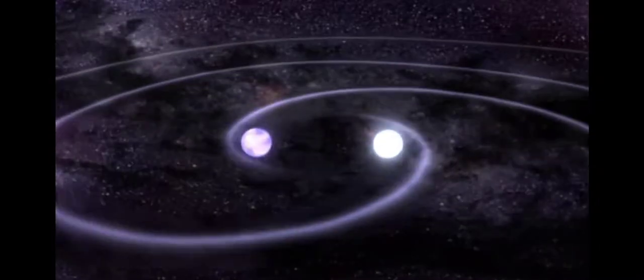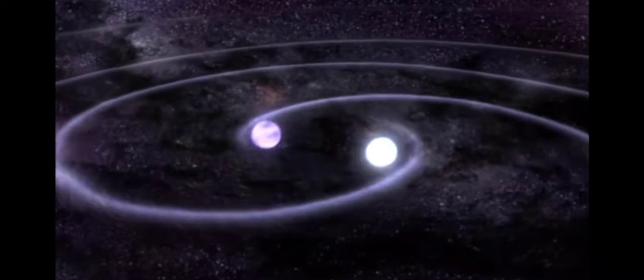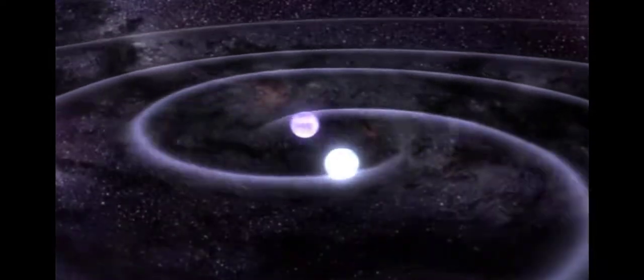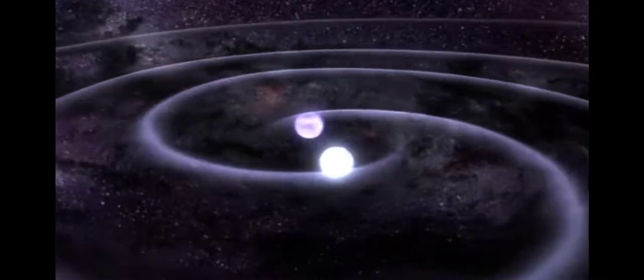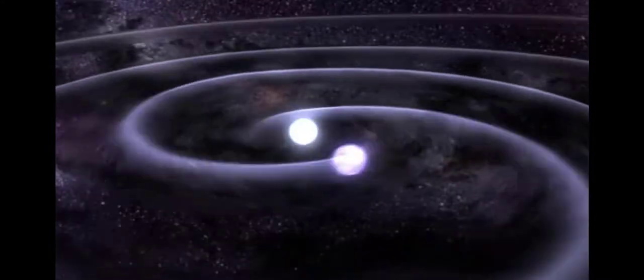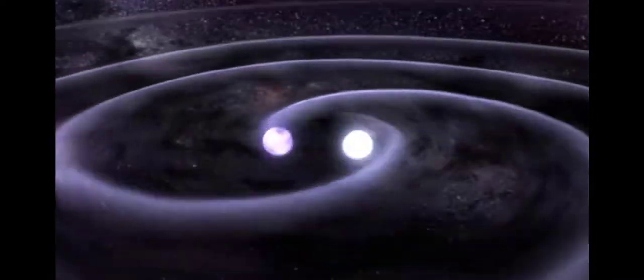This animation shows two neutron stars orbiting each other. The stars emit gravitational waves, ripples of space-time, which transfer away energy. This loss of energy explains the shrinking orbit, and eventually, the neutron stars merge.